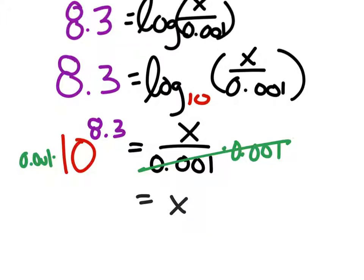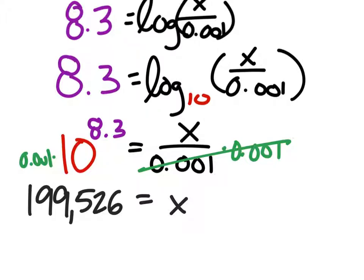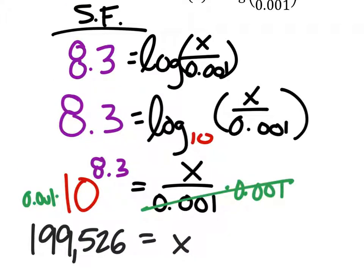So 0.001 times 10 to the power of 8.3 — that's a big number. That is a seismograph reading. 1,999,526. I rounded that to the nearest whole value. So that is for San Francisco.